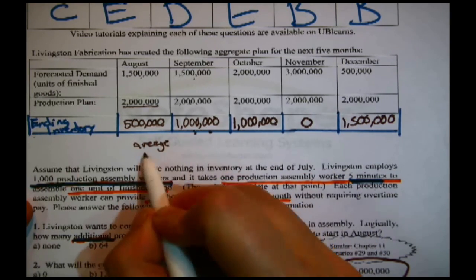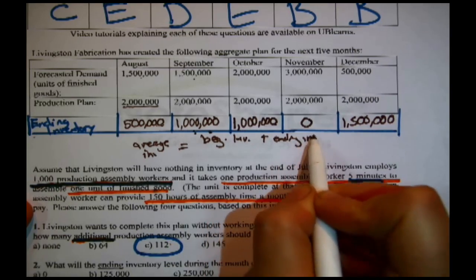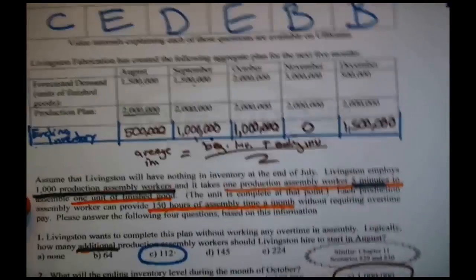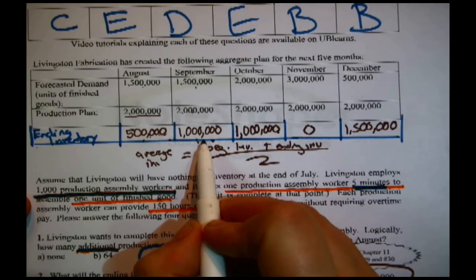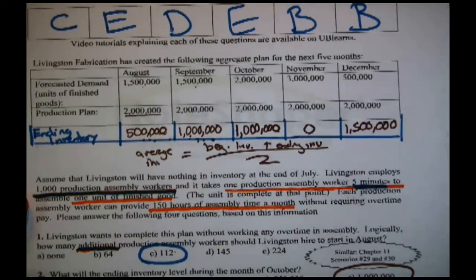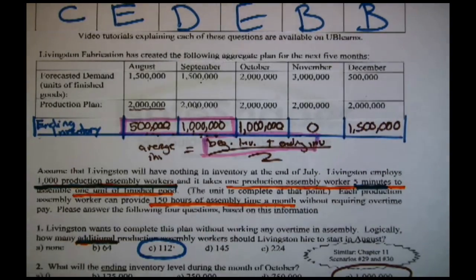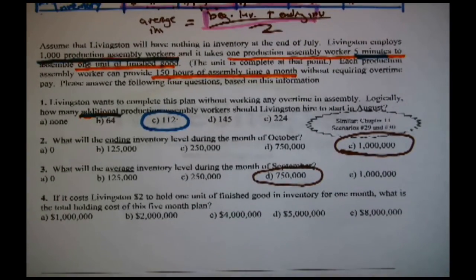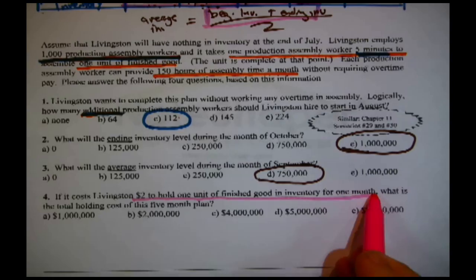What will be the average inventory during the month of September? Average inventory is beginning inventory plus ending inventory divided by two. For September, the beginning inventory is 500,000 — the ending inventory of August. The ending inventory for September is 1,000,000. So 500,000 plus 1,000,000 divided by two gives an average inventory of 750,000.